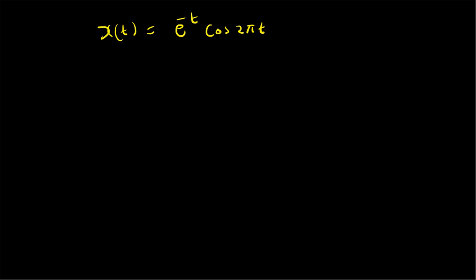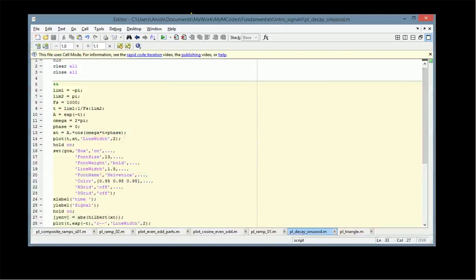For this purpose, first we will plot x(t) versus time t, and also we will plot y(t) = e^(-t), that is the envelope. So let us look at the MATLAB code. In this code, we have the time vector that is being constructed with the starting point, the ending point, and the sampling frequency t, and then we have the signal itself.